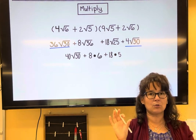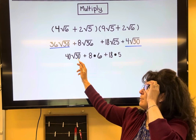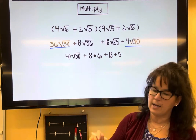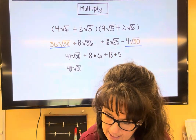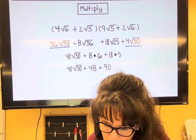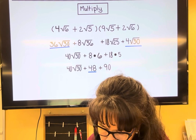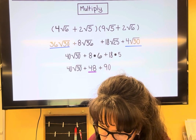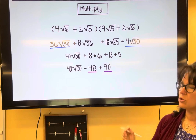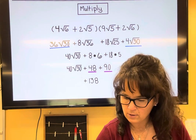I cannot simplify root 30 further because 30 equals 2 times 3 times 5, and you need two of a kind to take something out — we don't have that, so root 30 is fully simplified. Six times eight is 48, and 18 times five is 90. The 48 and 90 are like terms, so 48 plus 90 equals 138, giving a final answer of 138 plus 40 root 30.